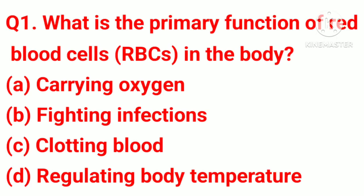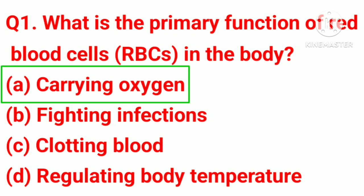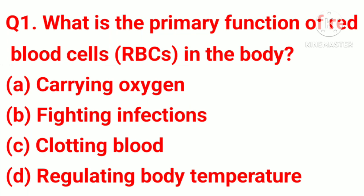Question number 1. What is the primary function of red blood cells in the body? Option A, carrying oxygen. Option B, fighting infection. Option C, clotting blood. Option D, regulating body temperature. Correct answer: Option A, carrying oxygen.